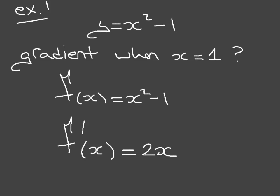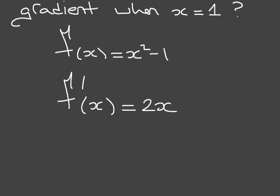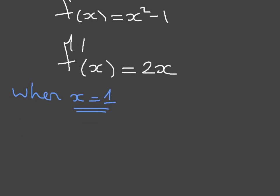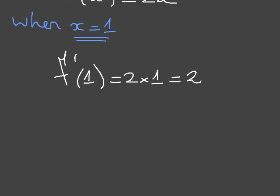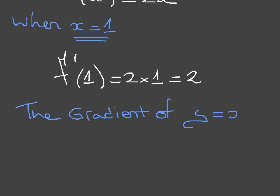So that's our first step done. Now, to find the gradient when x equals 1 — remember, that was given to us in the question — the gradient of the curve will be f dash of 1. Since f dash of x is equal to 2x, f dash of 1 will be equal to 2 times 1, which is equal to 2. And there we have it: the gradient of the curve y equals x squared minus 1 at x equals 1 is 2.